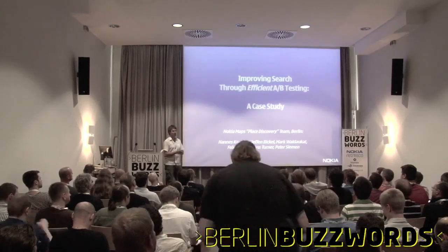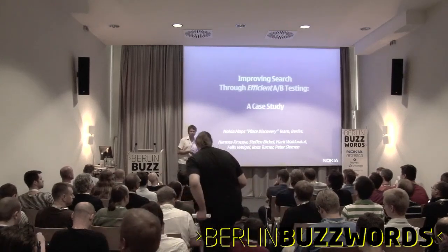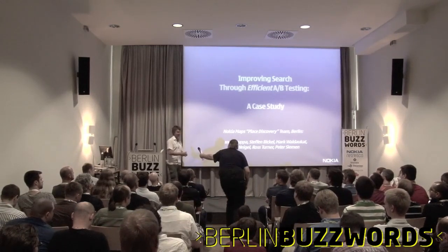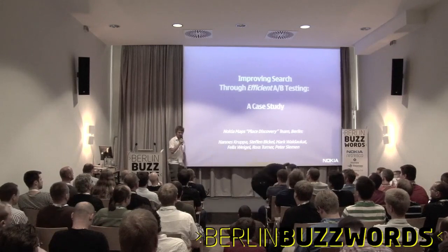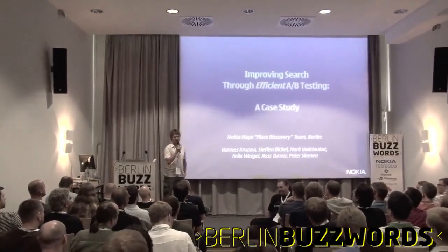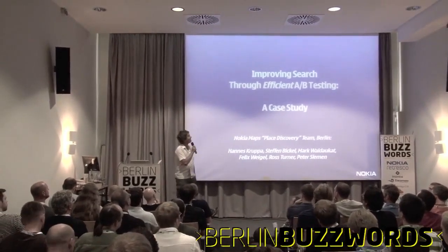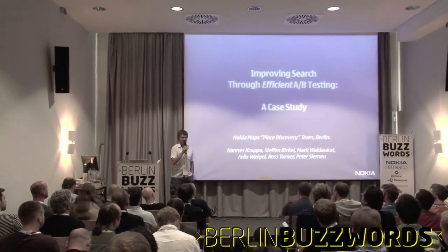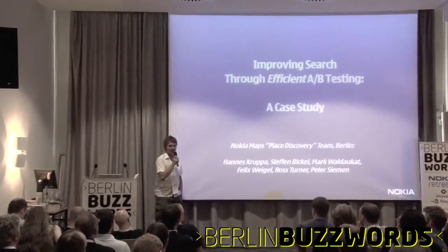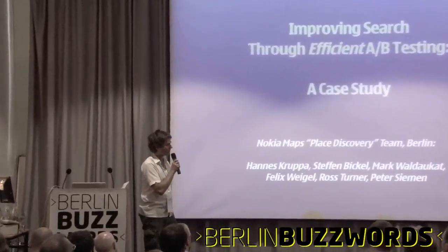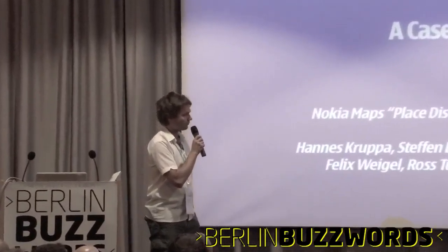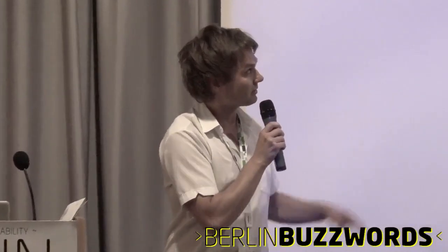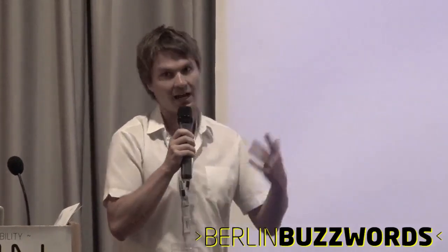I think with this talk I have two goals. First of all, I want to show you an algorithm that is hopefully interesting — efficient A-B testing; it's not classical A-B testing. And the other goal is I want to raise awareness for Nokia. Maybe you've also seen that we're a gold sponsor of this conference. We use a lot of Apache software, and in this case study you're going to see how.